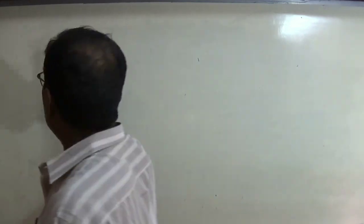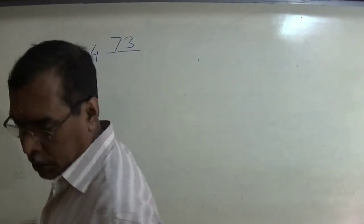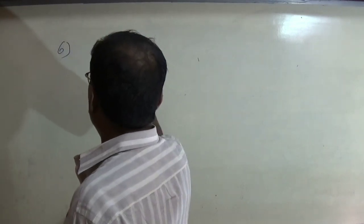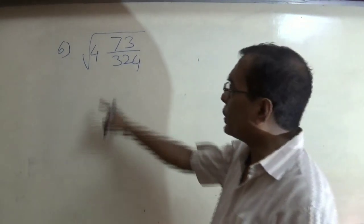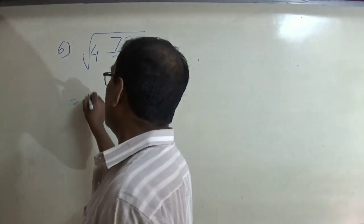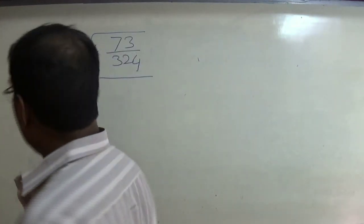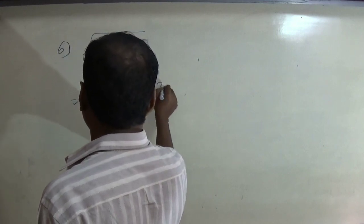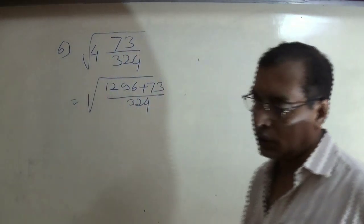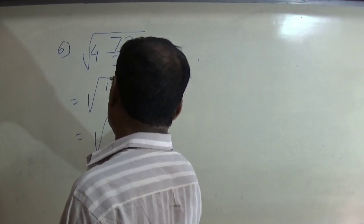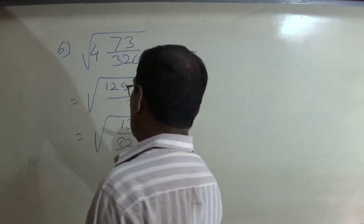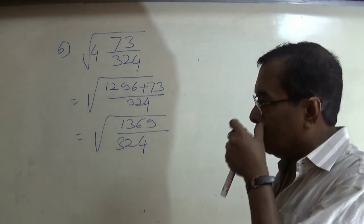The next question involves a mixed fraction — question number 6 from Exercise 3G: square root of 4 and 73/324. You will have to change this mixed fraction into an improper fraction. To do that, multiply 4 by 324 and then add 73: that is 4 × 324 = 1296, plus 73, giving 1296 + 73 = 1369. So we now have √(1369/324). We put the square root sign separately with the numerator and denominator.